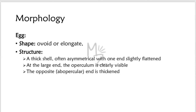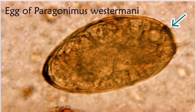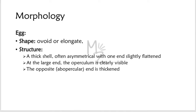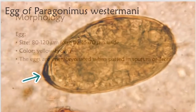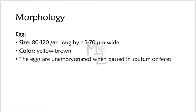The shape of the egg is ovoid or elongated. It has a thick shell that is often asymmetrical, with one end slightly flattened. One end is the large end where there is a clearly visible operculum, and the other end — the abopercular end — is thick. The size of the egg is 80 to 120 micrometers long by 45 to 70 micrometers wide. It is yellow to brown in color, and the eggs are unembryonated when passed in sputum, feces, or urine.